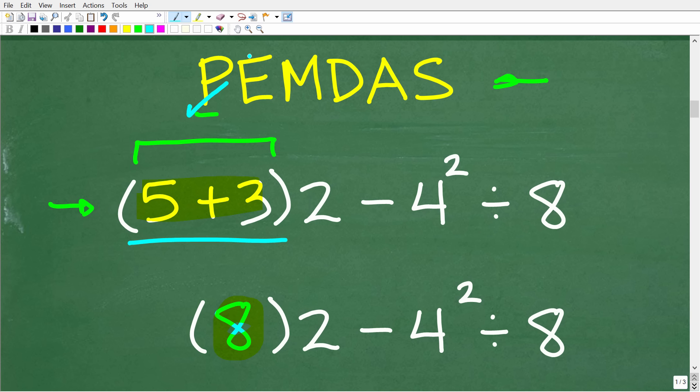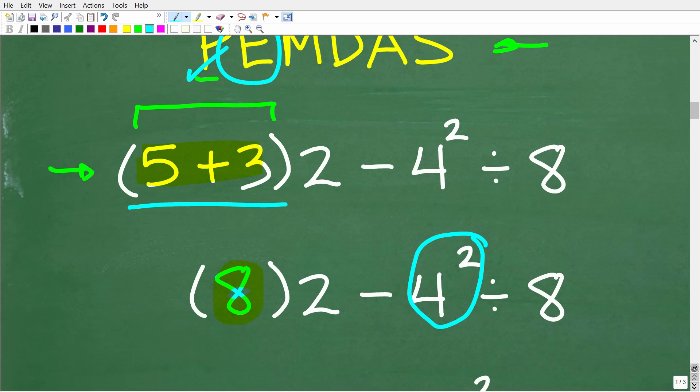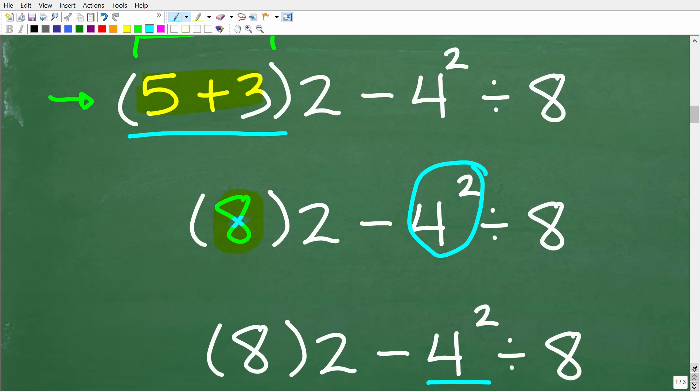All right, so we took care of our parentheses. Now we're going to move on to E, which is powers. So we're scanning our problem. Do we have any powers? Well, of course we do. We have four squared. So that is going to be our next step.